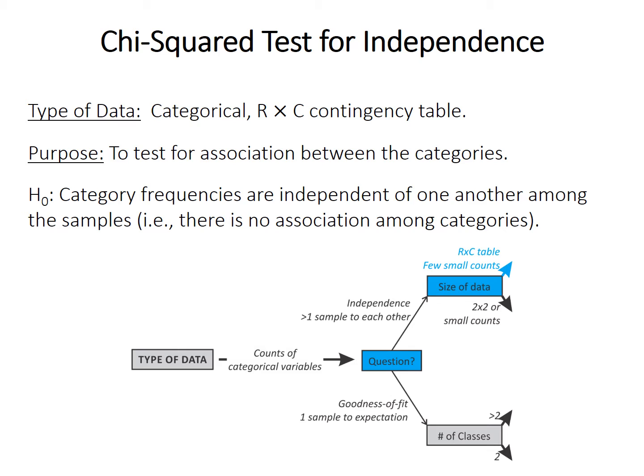The purpose is to test for association between the category counts in the different samples. The null hypothesis is that the frequencies — also known as the counts — are independent of one another among the samples. Another way of saying this is that the counts are equal in all samples; there is no association.